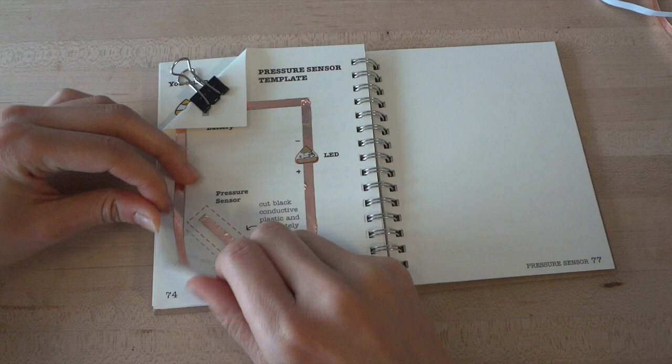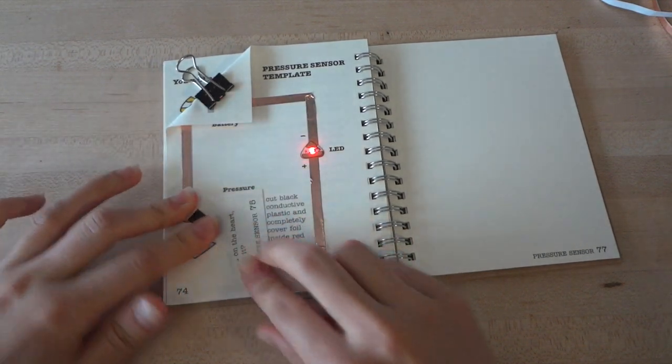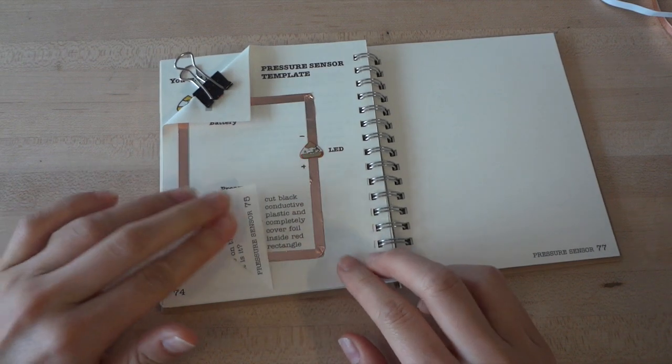Then, fold the bottom left corner along the dotted line. You'll notice that this makes a switch. When you press down, your light will turn on. When you let go, the light will turn off.